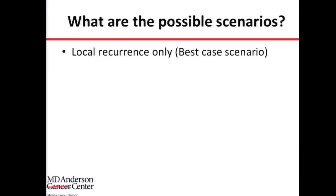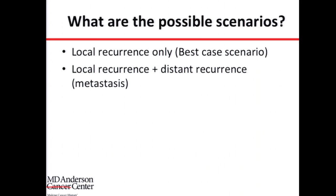These are all things we think about when we see a patient with a local recurrence. Once the metastatic workup is complete, the scenarios are: the best case is a local recurrence only — just in the area of the kidney or where it was. The other scenario is a local recurrence in the presence of distant metastatic disease, which could be in the lung, liver, bone, or other places.